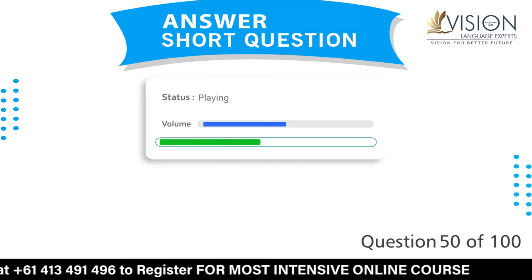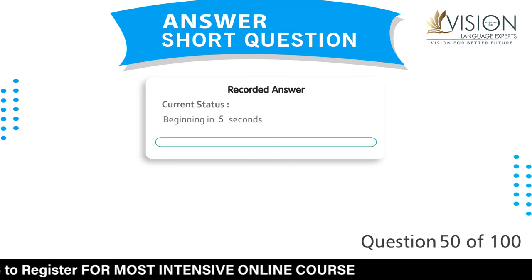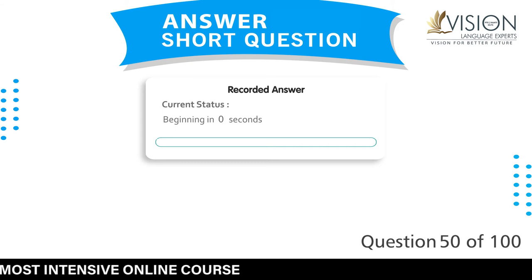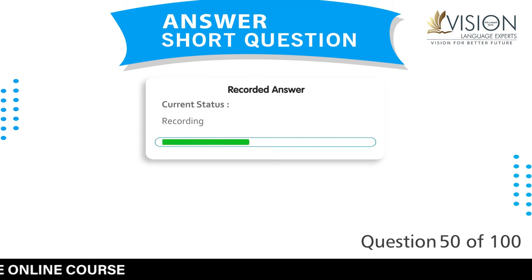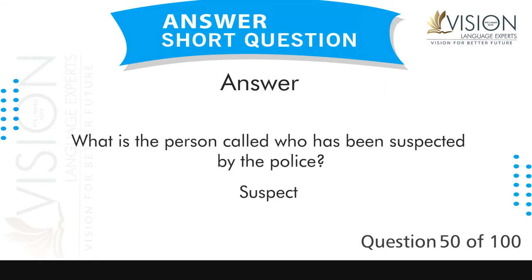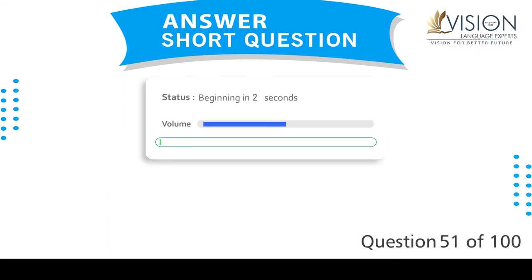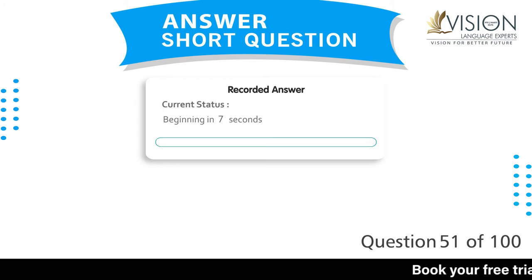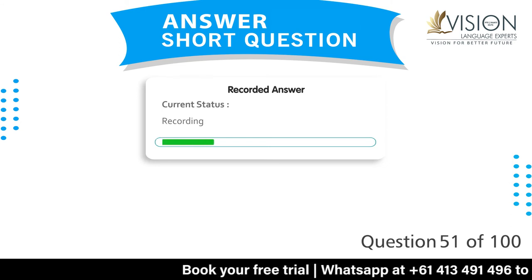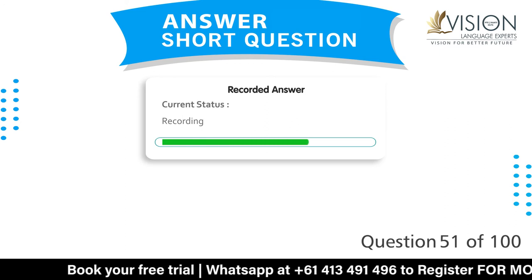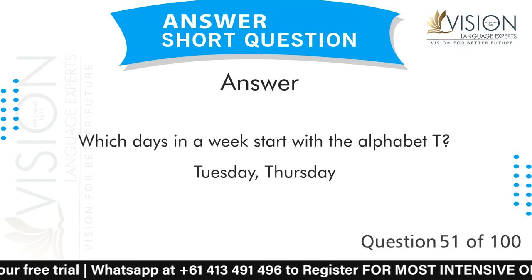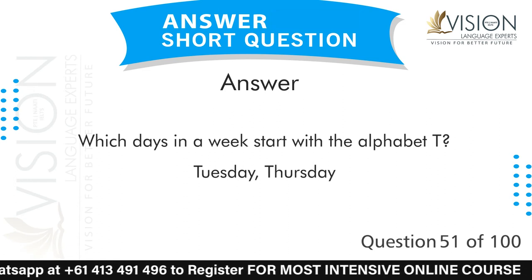What is the person called who has been suspected by the police? Suspect. Which days in a week start with the alphabet T? Tuesday and Thursday.